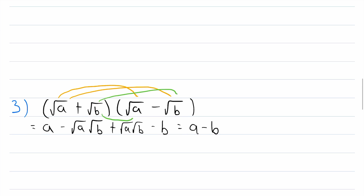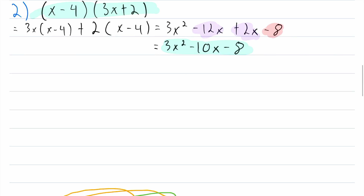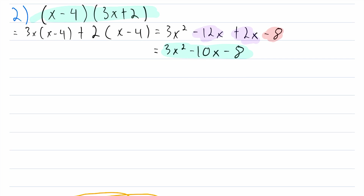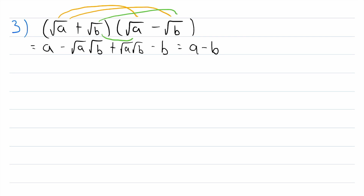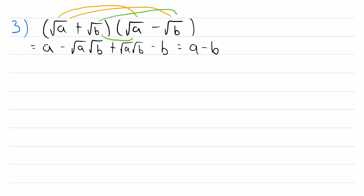Those are two different ways we could use the distributive property. I prefer the approach from this example — it's a little more straightforward. But it's a pretty neat result: this complex-looking expression is just equal to a minus b. That's the beauty of expanding and simplifying.